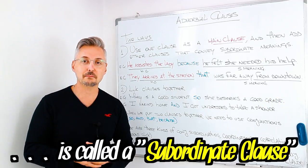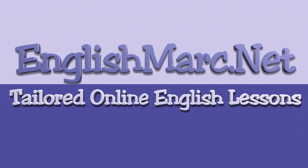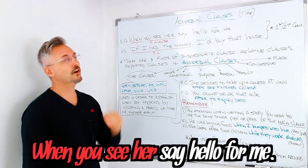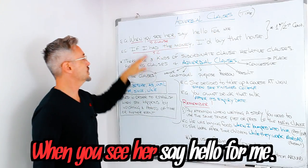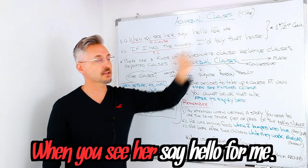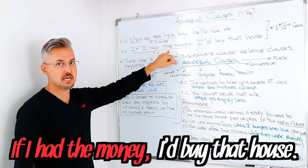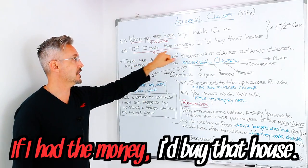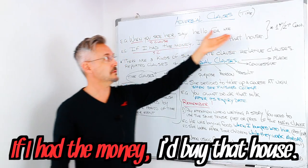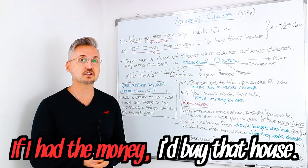Here are two examples of subordinate clauses. 'When you see her, say hello for me' — the subordinate clause is 'when you see her.' Another example: 'If I had the money' — that's the subordinate clause — 'I'd buy that house.' These are also examples of conditionals, the first and the second. If you want to watch a lesson on conditionals, you may click here.